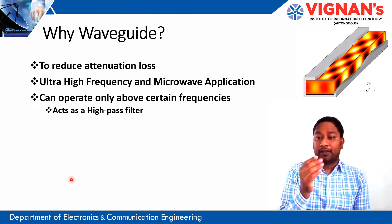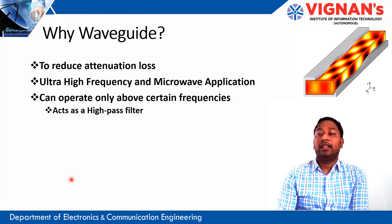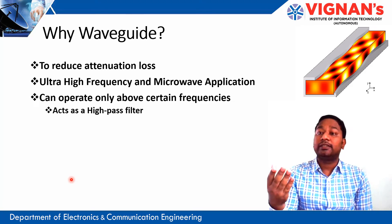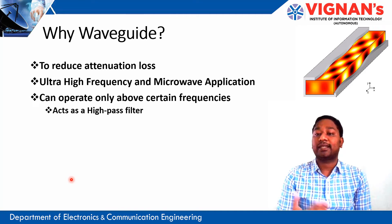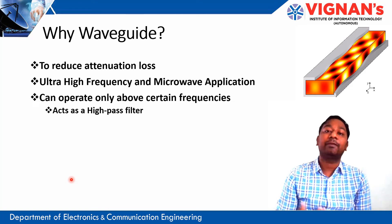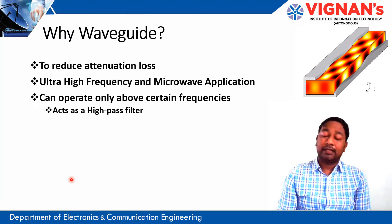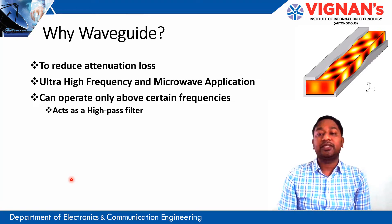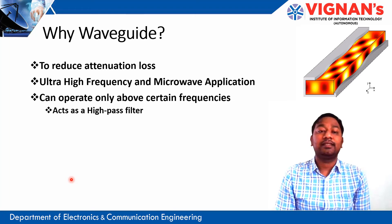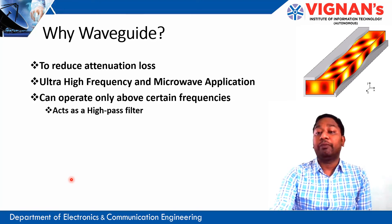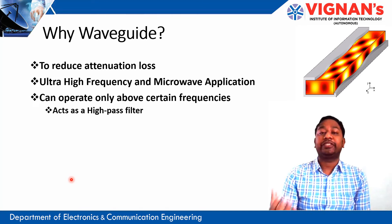When a waveguide is not properly matched at the output side, reflection of the wave occurs. The incident and reflected waves in the waveguide create a standing wave pattern. Similarly, in a transmission line, if the receiver side is not properly matched, a reflected wave is generated. We try to match the receiver side properly to reduce losses.